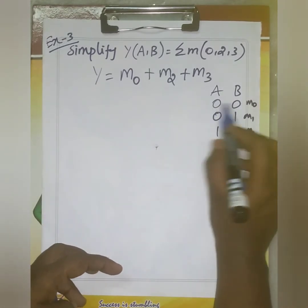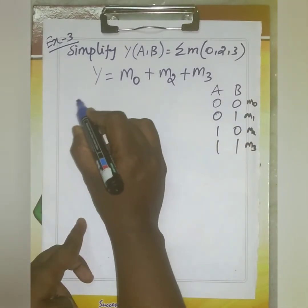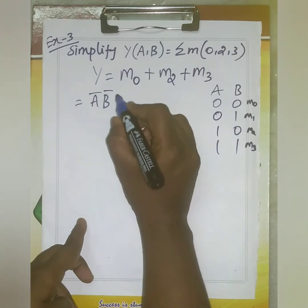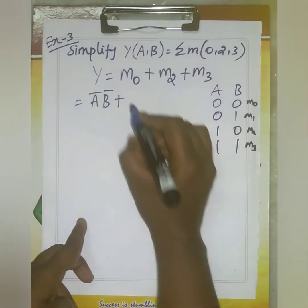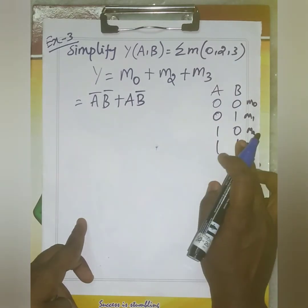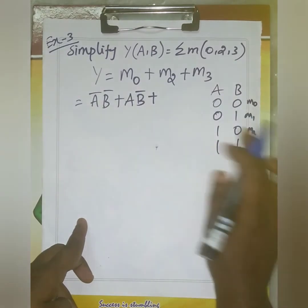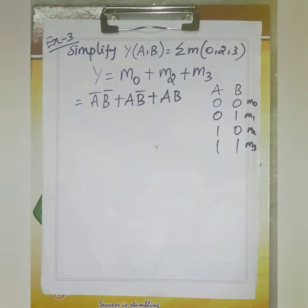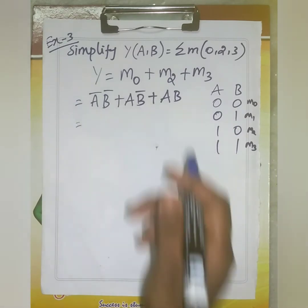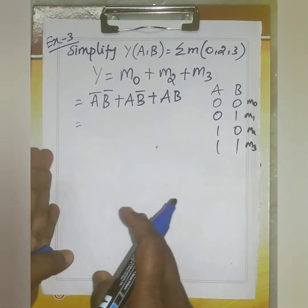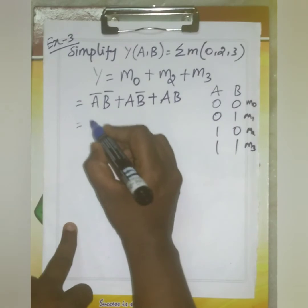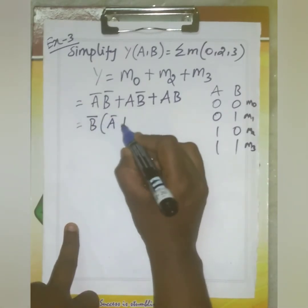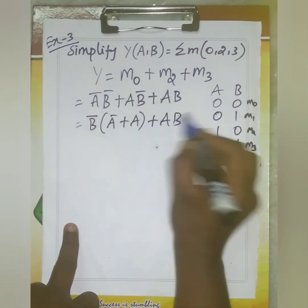From the truth table, the expression is: Y = A̅B̅ (min term 0) + AB̅ (min term 2) + AB (min term 3). Grouping the first two terms, B̅ is common: B̅(A̅ + A) + AB = B̅(1) + AB = B̅ + AB.